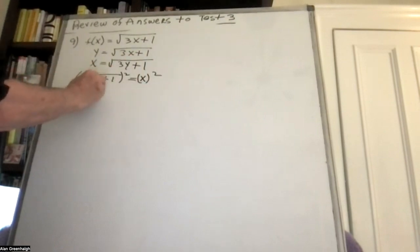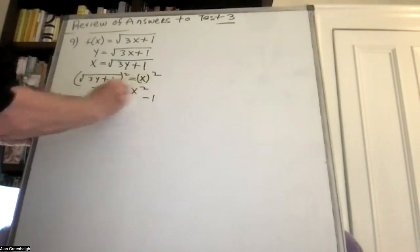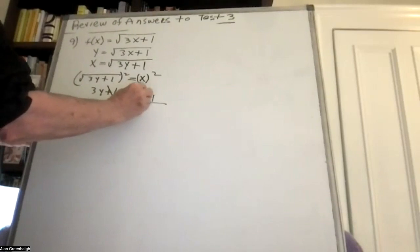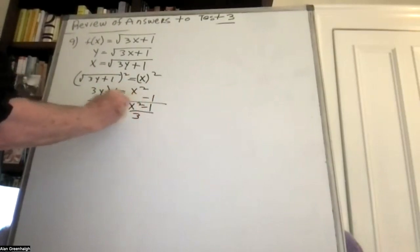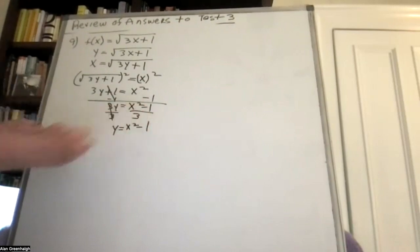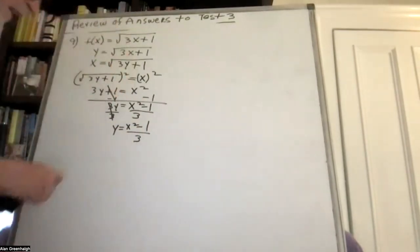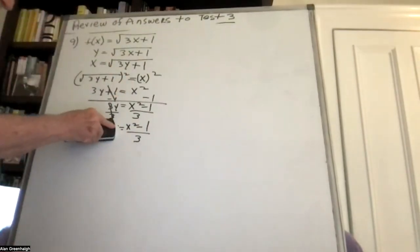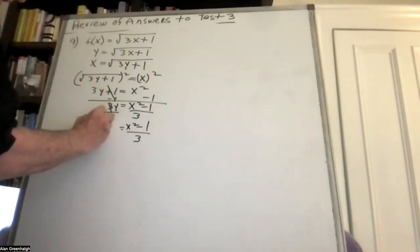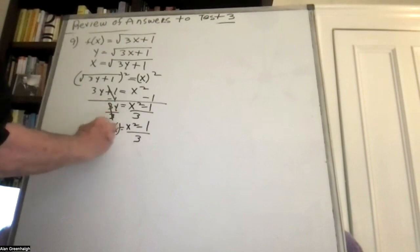Get rid of the 1, then divide by 3. The inverse turns out to be x squared minus 1 over 3. Replace y with the inverse notation f-inverse of x. That was the inverse — half the problem. It was a 10-point question, so 5 points to find that.